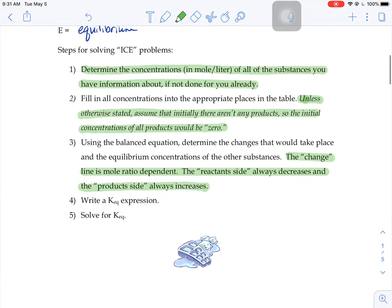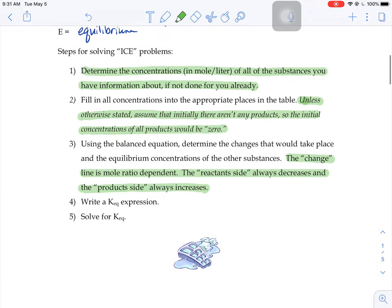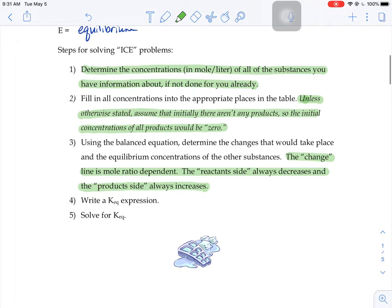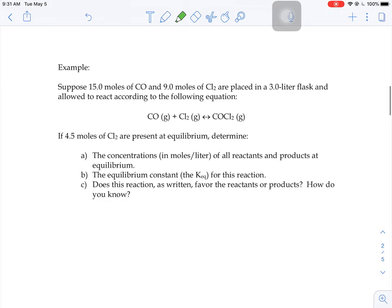If we look back at the original steps, step one was figure out the concentrations of all the substances you have information about. So I'm going to do just that. What I'm going to find is the concentration of carbon monoxide initially. When the reaction first starts, what's its molarity?